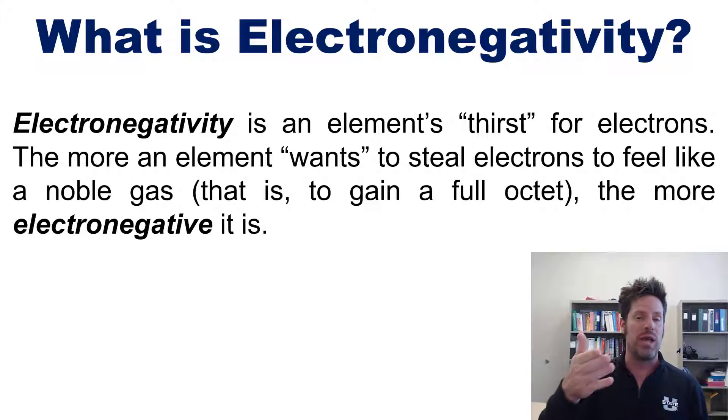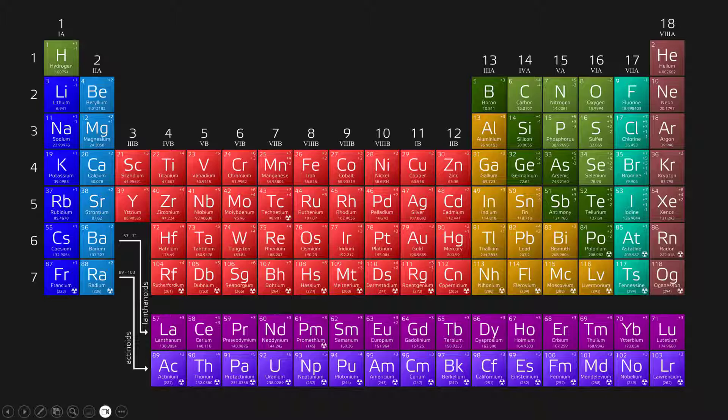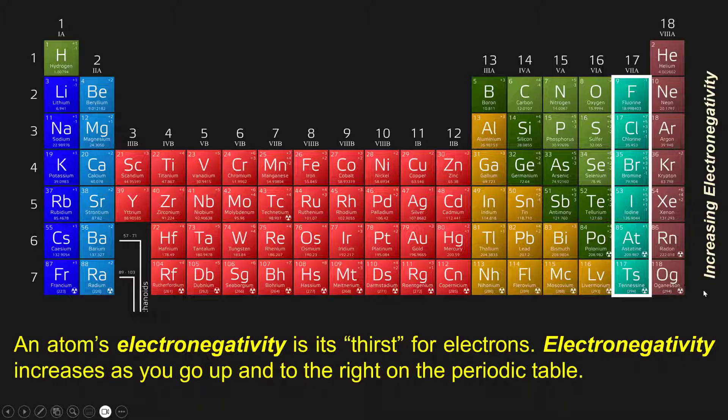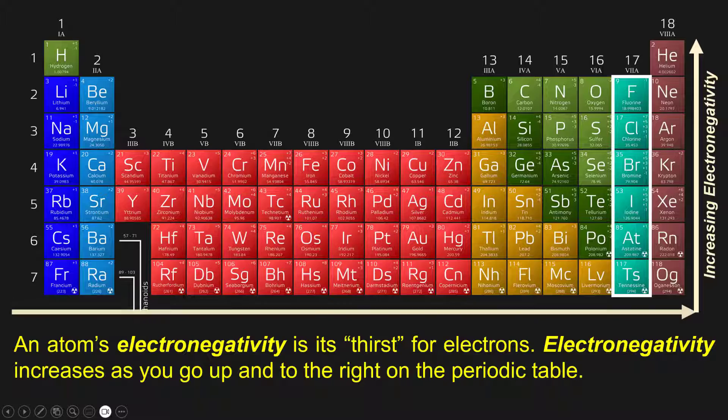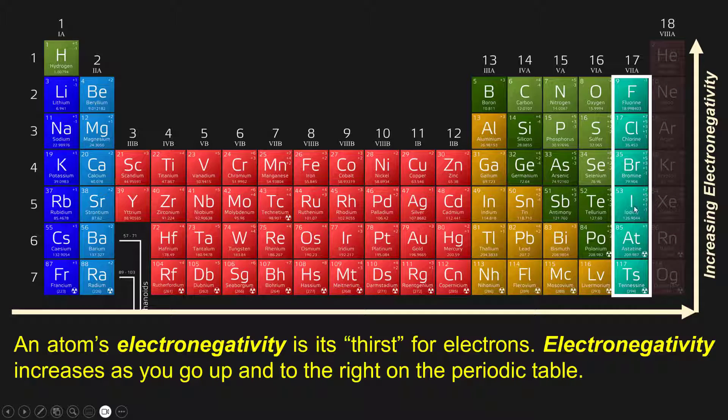Now on the periodic table, the general trend for electronegativity is that it increases as you go up and to the right on the periodic table, excluding the noble gases. Thus, the most electronegative element is fluorine, way up here in the upper right-hand corner, and the least is francium, way down on the opposite end.